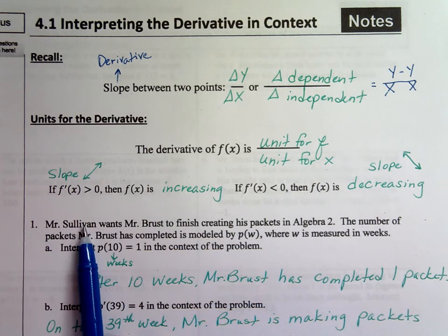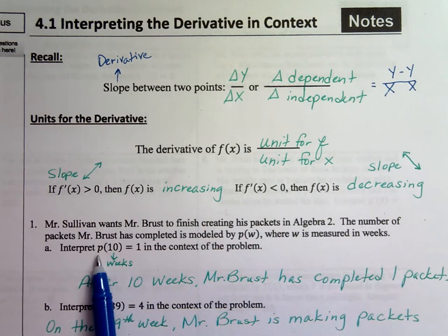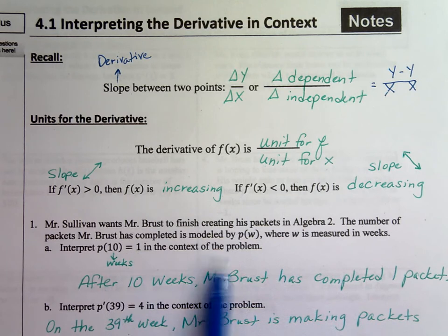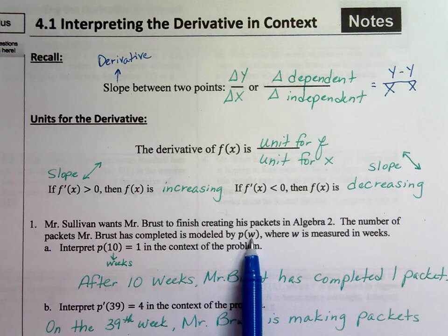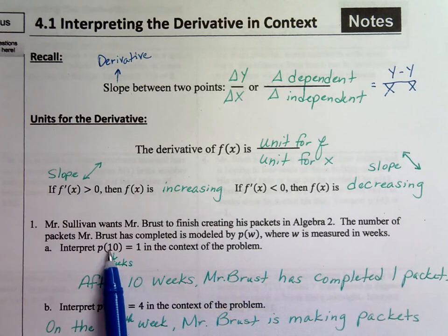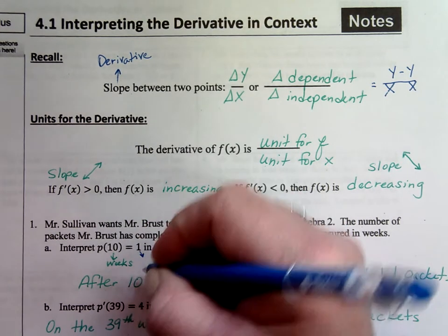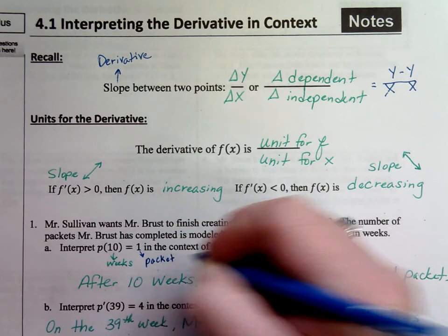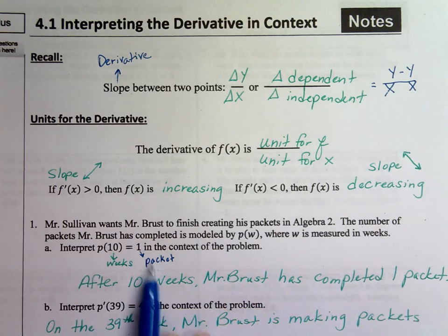So Mr. Sullivan wants Mr. Bruce to finish creating his packets in Algebra 2. The number of packets Mr. Bruce has completed is modeled by p(w), where w is measured in weeks. Interpret p(10) = 1 in the context of the problem. Well, look at what's inside the parentheses. W is inside the parentheses. W is the weeks. So 10 represents how many weeks. The 1 represents how many packets that he creates. So after 10 weeks, Mr. Bruce has completed one packet. That's what that means.